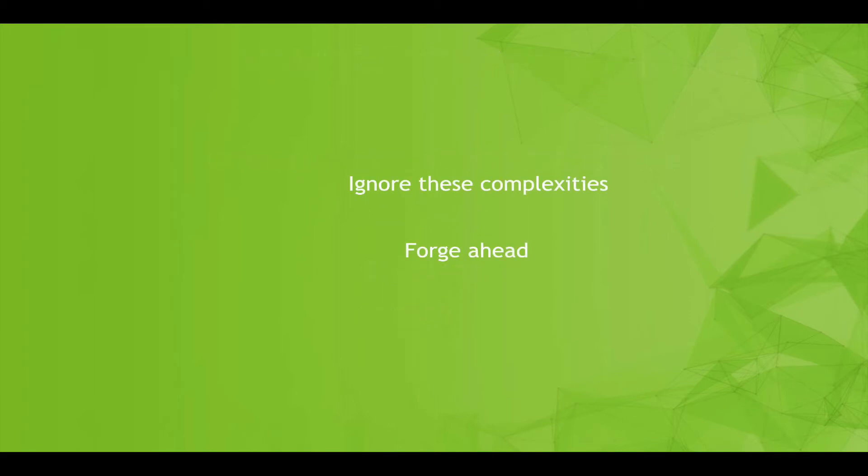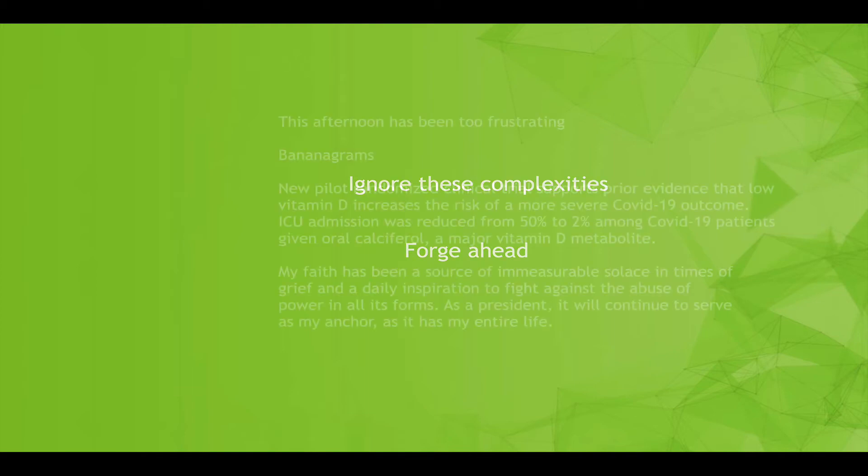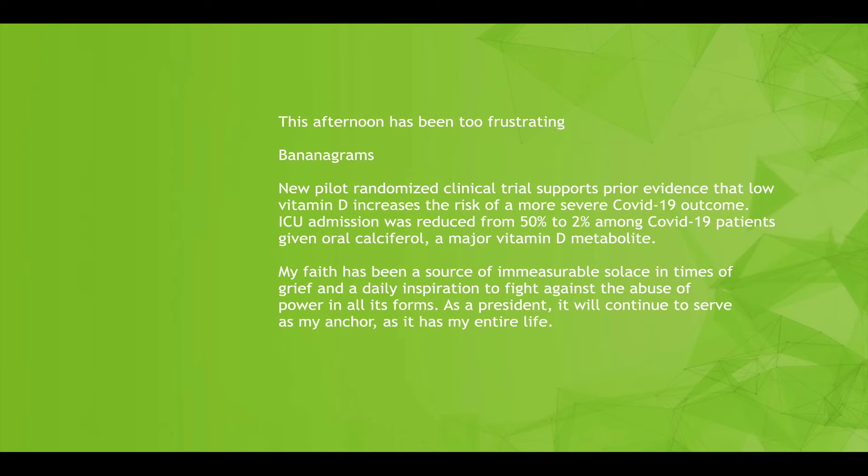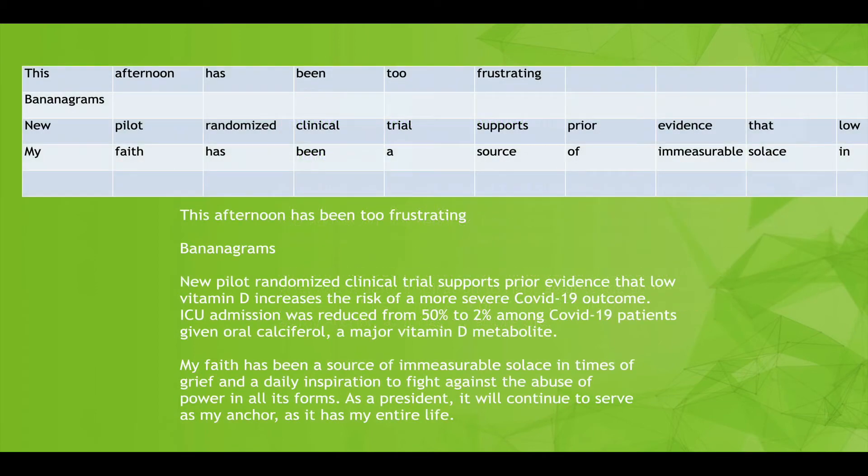But we're going to ignore these complexities for now and just kind of forge ahead and see how far we can get and create a system that at least works and processes text. Let's go back to those tweets. One approach would be we can just put it, mush everything into columns, right? So the first word will be in the first column, second word in the second column, and so on. If things are short, like Bananagrams, we'll just pad all those columns with blanks. And if the tweet is too long, we'll just truncate the tweet. So that would be one way of doing it.